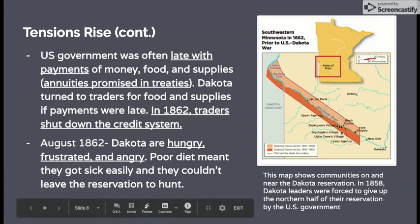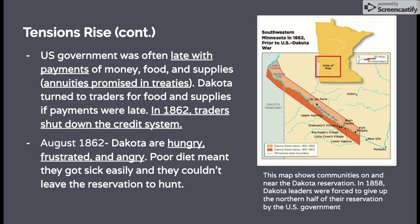In the picture on the right, you can see that the top portion — the lighter orange portion of the reservation — is what they had to give up in 1858. The lower, darker orange portion is what they were left with after 1858. It's a very narrow, 10-mile-wide strip of land.